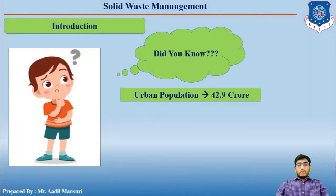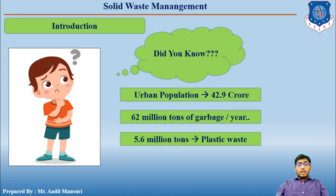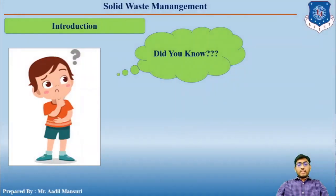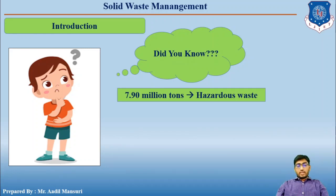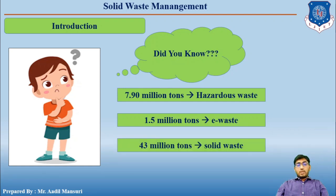Out of 121 crore people, 42.9 crore people live in urban areas, and these people create 62 million tons of garbage per year. Out of this, 5.6 million tons includes plastic waste, 0.17 million tons includes biomedical waste, 7.9 million tons includes hazardous waste, 1.5 million tons includes e-waste, and the maximum — 43 million tons — is solid waste generation.